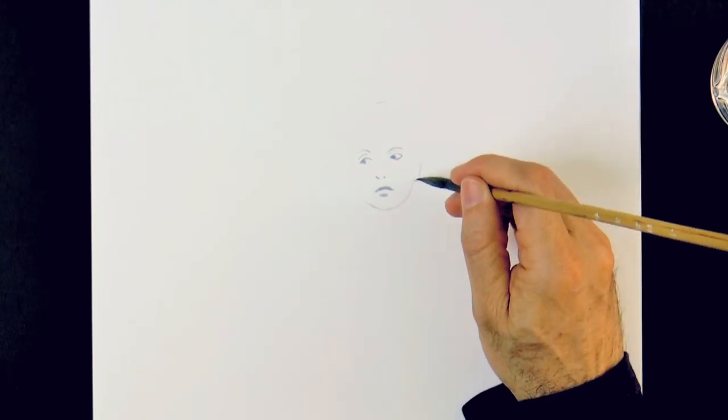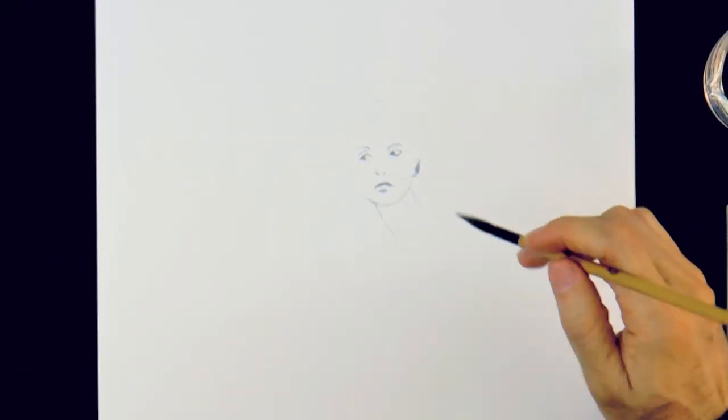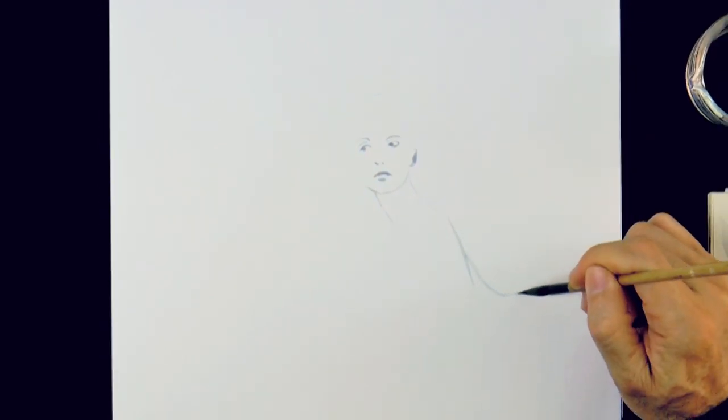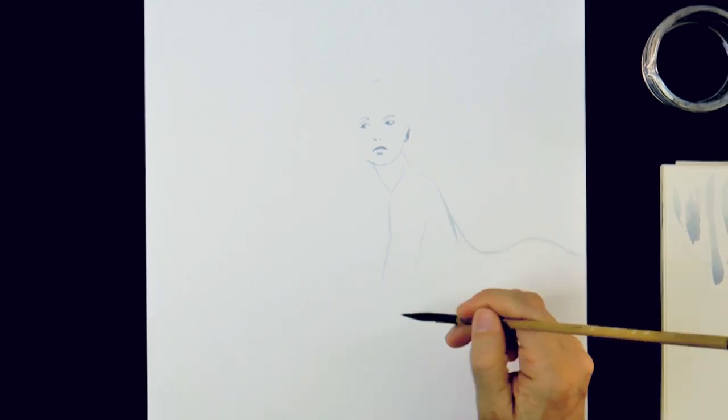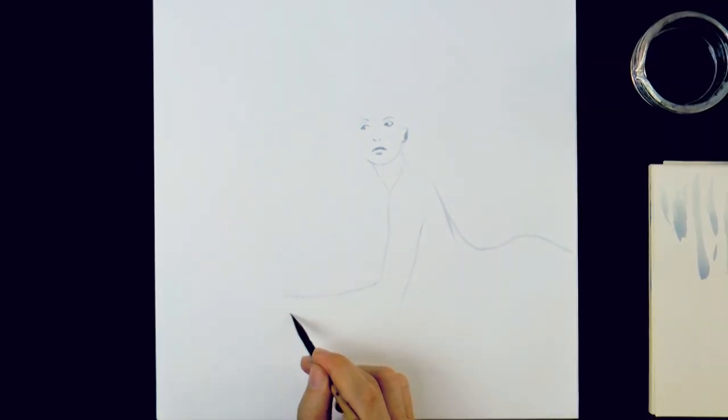Then the chin, the jaw and the ear. I use this light tone for the sketch because I feel more free to make mistakes and they won't show very much.